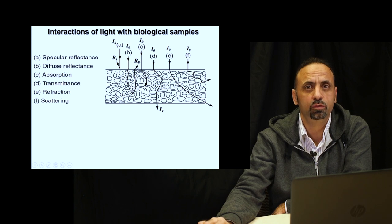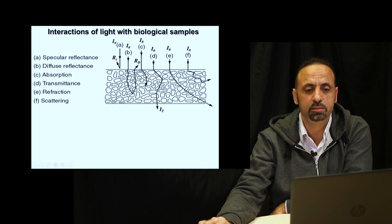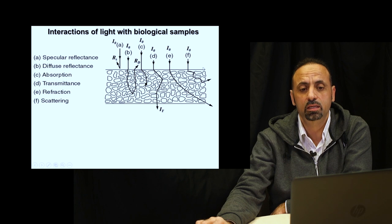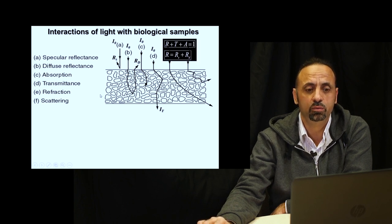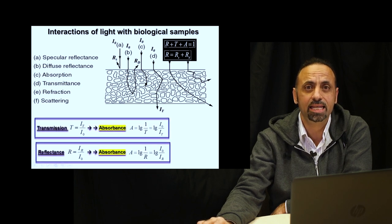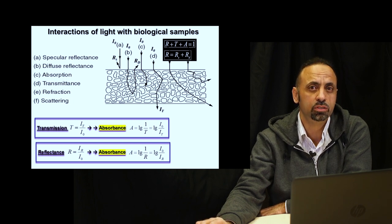Diffuse reflectance carries a lot more information than specular reflectance, which may not be useful. The incident light could be completely absorbed by the composition of your samples, or could either go through your sample as transmitted light, or be scattered and reflected from your samples. These are the features of how light can interact with samples. In general, the information useful for our analysis is reflectance, absorbance, and transmittance, and we can make conversions between all of these.